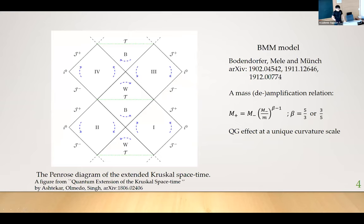In this work, what we consider is this BMM model constructed by Bendendorfer, Mele, and Münch. The overall picture is very similar to the one created by Ashtekar and his collaborator. The bouncing surface is inside the event horizon, so black hole followed by a white hole. This is basically a cyclic model. To the future, there are infinitely many cycles and there also are infinitely many cycles in the past.